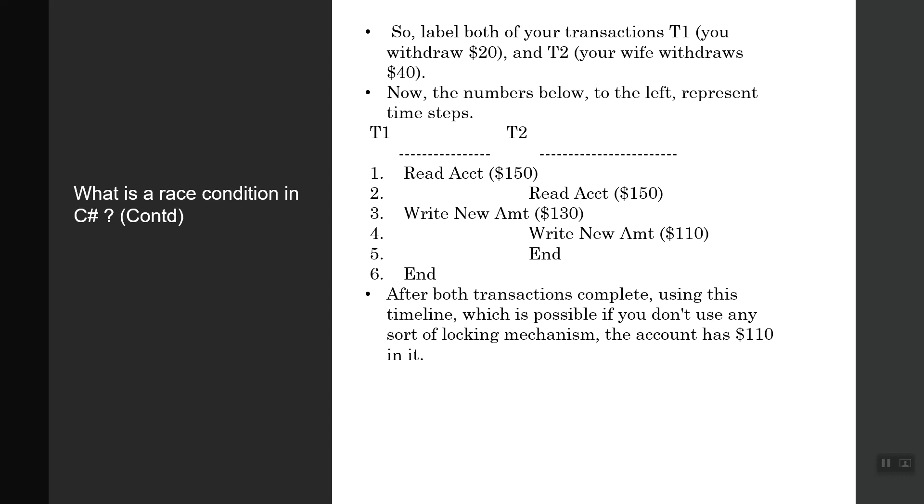After both transactions are complete using this timeline which is possible if you don't use any sort of locking mechanism, the account has $110 in it. Although this is $20 more than it should, your transaction is lost forever but you still have the money. This is called race conditions.